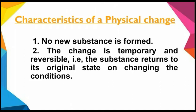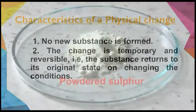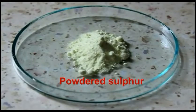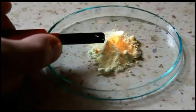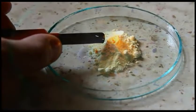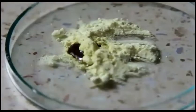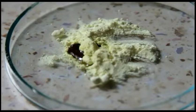Second, the change is temporary and reversible. That is, the substance returns to its original state on changing the conditions. Let's take some powdered sulphur and gently heat it in a wash glass. It melts into a pale yellow liquid. Stop heating and allow the sulphur to cool. Molten sulphur quickly changes back to the solid state. This example proves that physical change is both temporary and reversible.